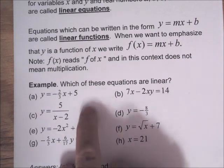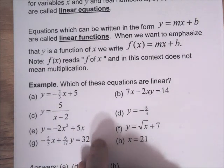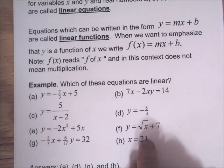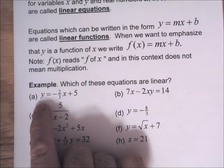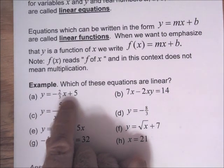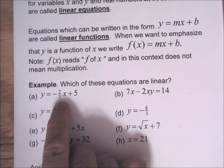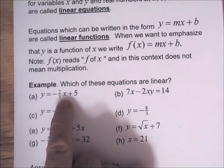So here's some examples of some equations. Which ones are linear? Well, part A here, Y equals negative two-thirds X plus 5. Well, that's in the form Y equals MX plus B, right? Y is some number times X plus another number. So that's linear.